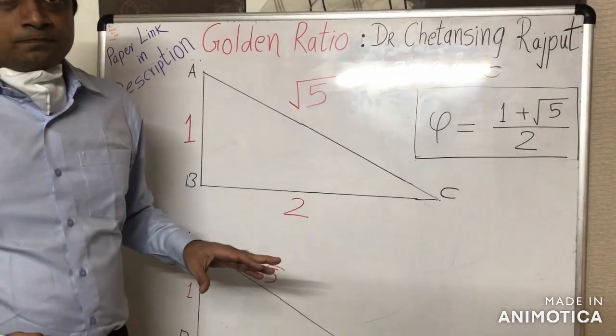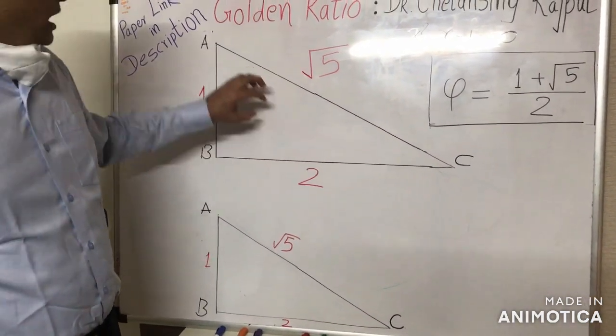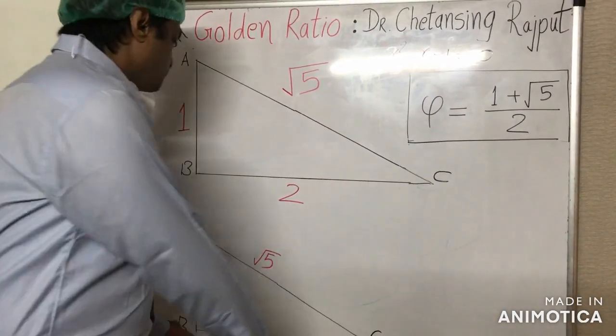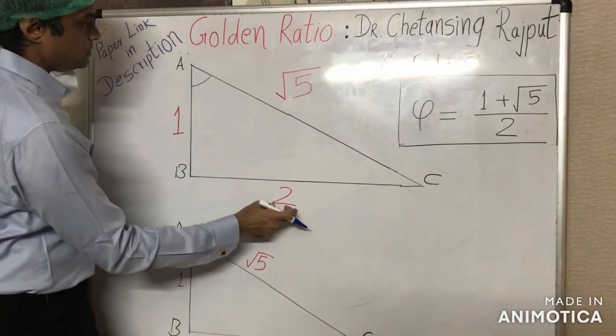And not just sides, even the angles of this right triangle. The angles of this triangle are also the precise expression of golden ratio.